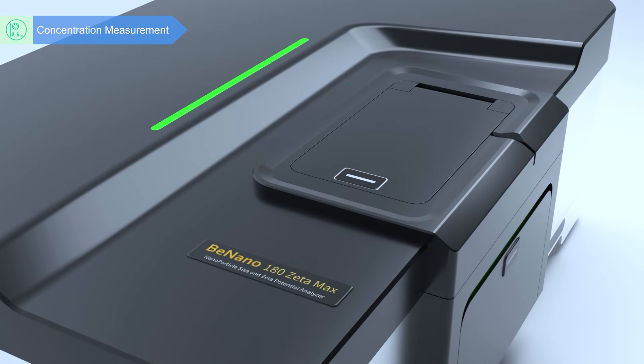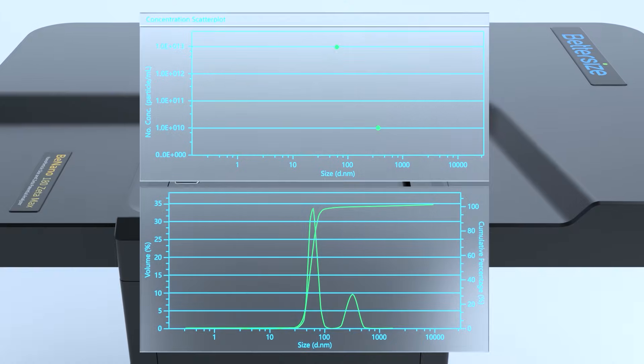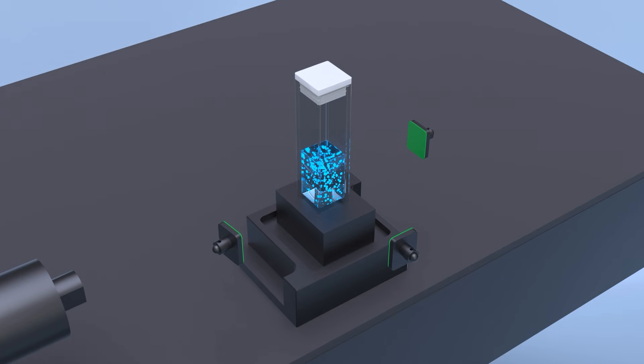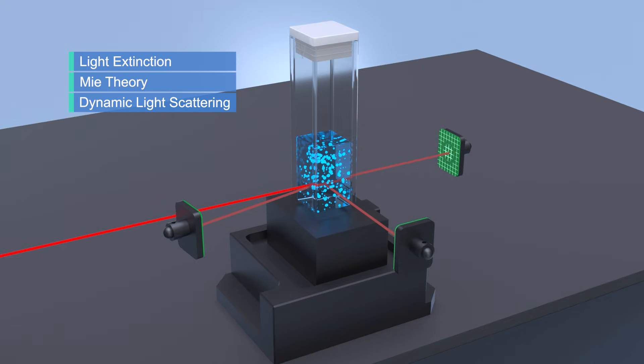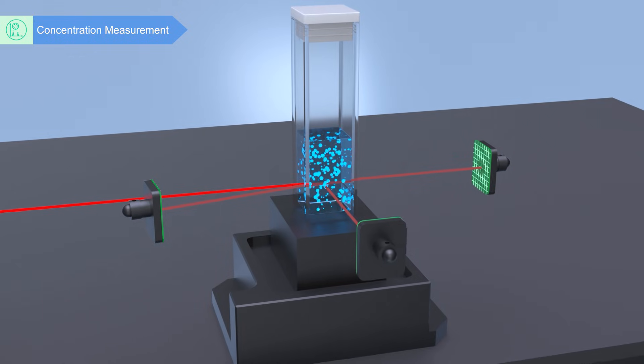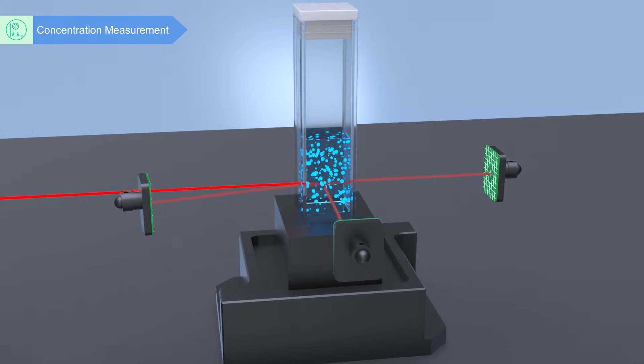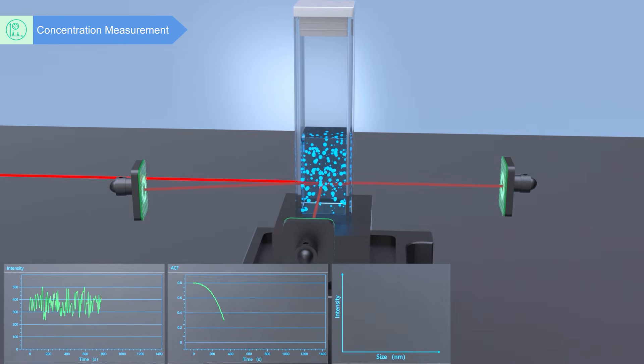Bnano is able to detect particle concentration by the LEDLS technology. The LEDLS technology combines the light extinction, MIE theory and dynamic light scattering techniques. By using a scattered light detector at 90 or 173 degrees and a transmitted light detector placed at a zero degree angle,